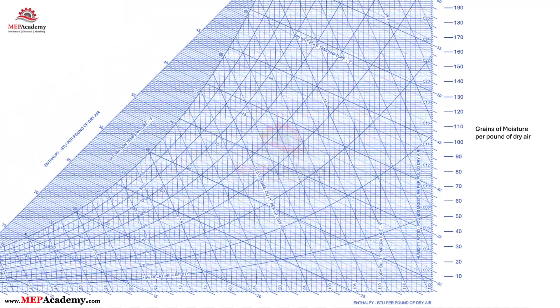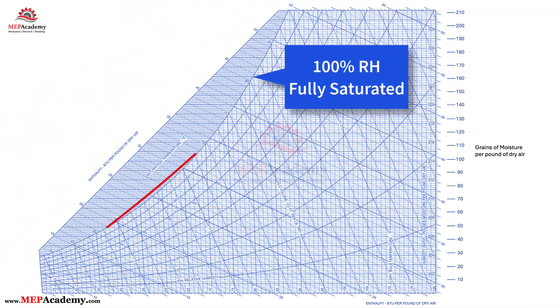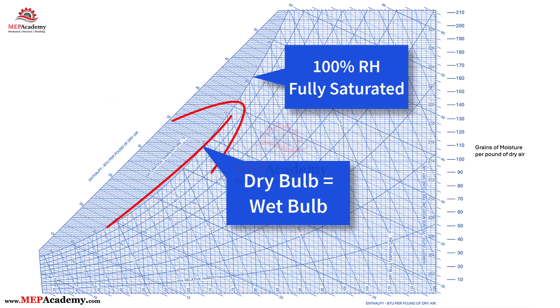The curved upper boundary is the saturation curve. That's 100% relative humidity. This outer curved boundary is called the saturation curve. It represents 100% relative humidity, air that is fully saturated with moisture. Along this curve, the dry bulb temperature and wet bulb temperature are equal. At any point on the saturation curve, the air cannot hold any more water vapor without condensation occurring.